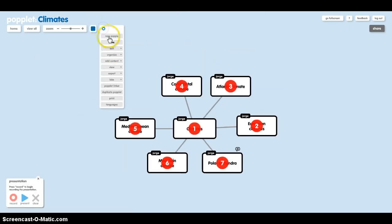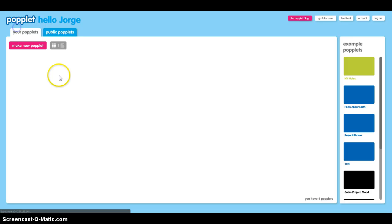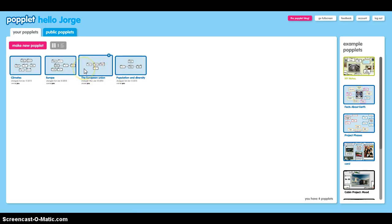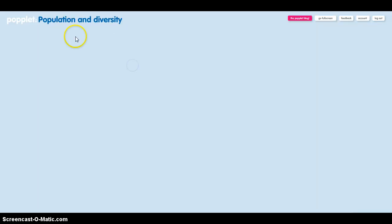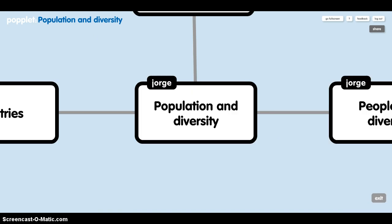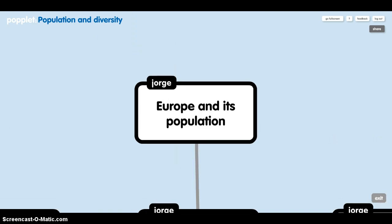Let's go to the next mind map: Population and diversity. Europe and its population. Europe is a prosperous, developed continent. It is the third most populated continent after Asia and Africa. About 730 million people, around 11% of the world's population, live in Europe.